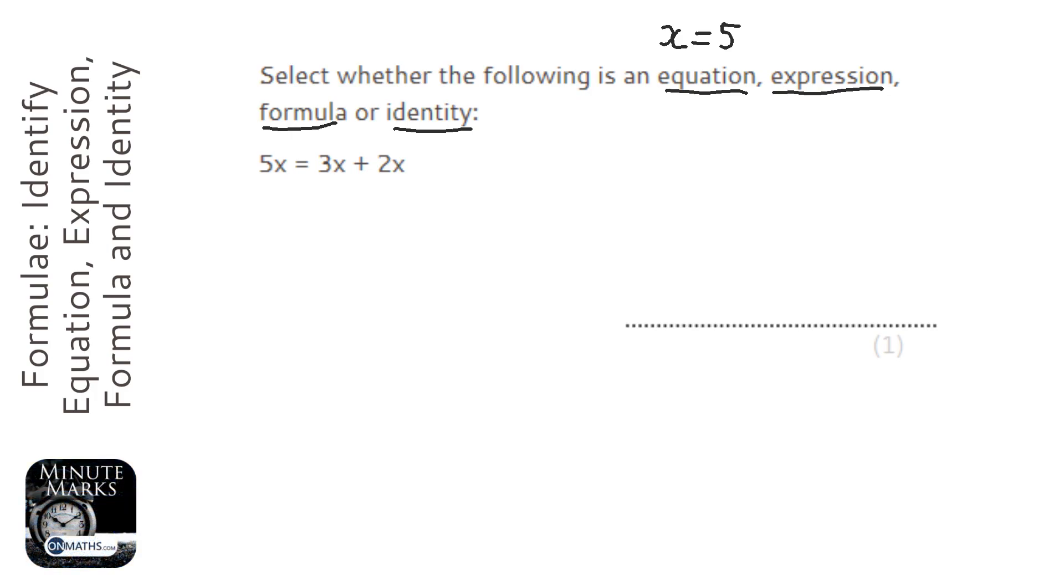Expression is something that doesn't have an equal sign. So 5x plus 3 is an expression, there's no equal sign there. That's easy to spot, because if there's no equal sign, it's an expression.